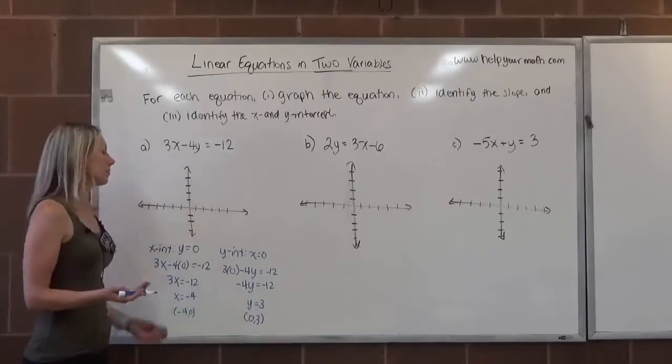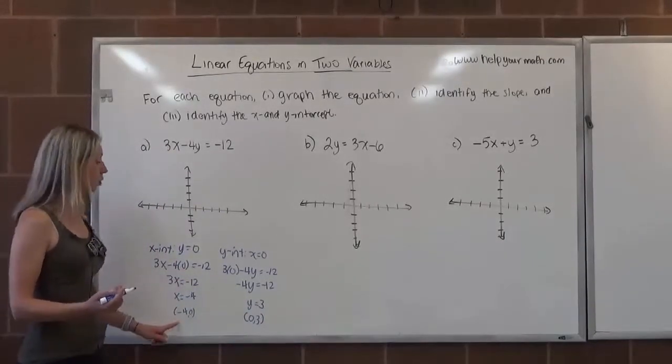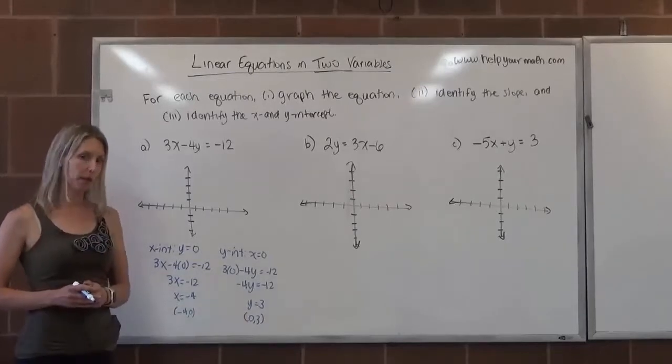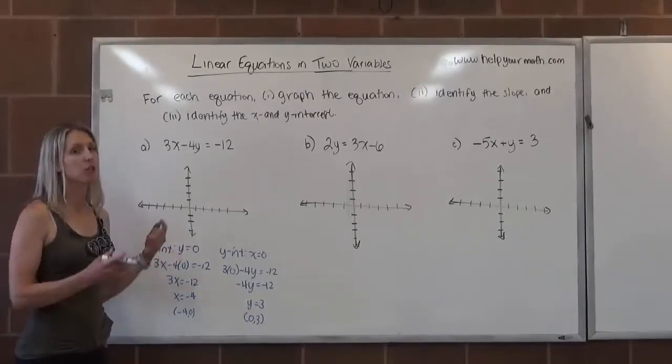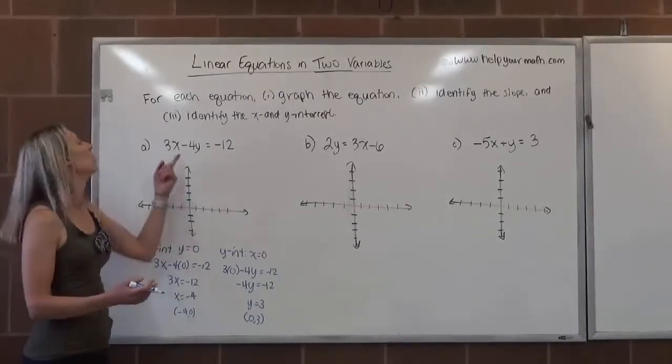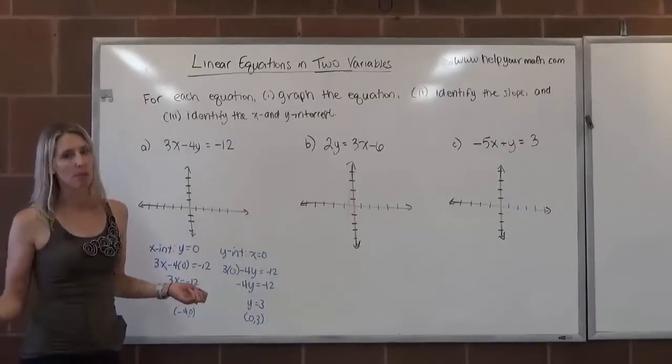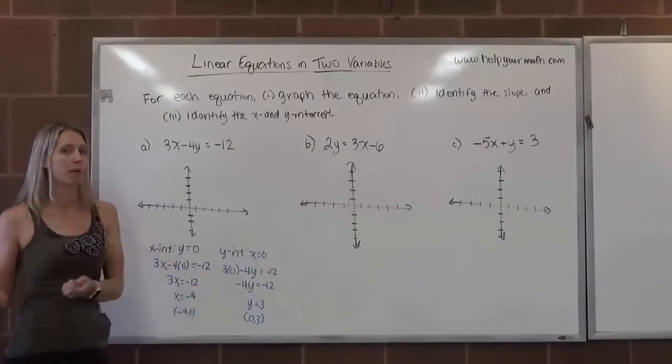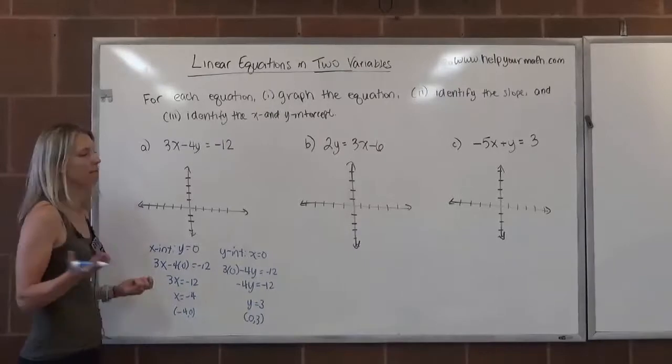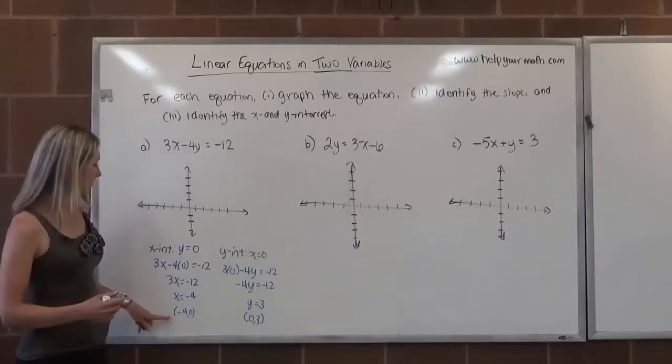Now to determine the slope, we have a variety of options. We have two points, so we can use the slope formula. We can plot the points and use rise over run. We can take this equation and write it in slope intercept form. So there's really no wrong way to find the slope other than not finding the slope.